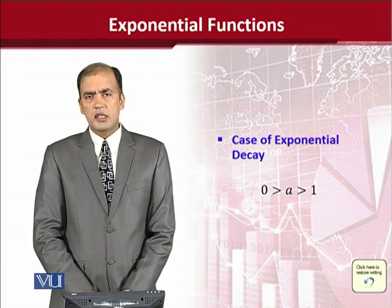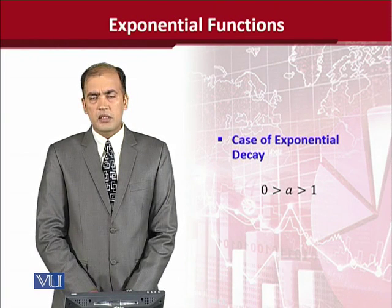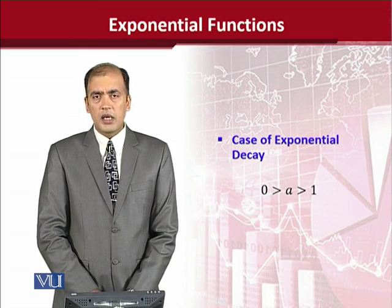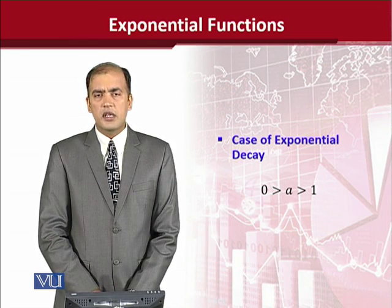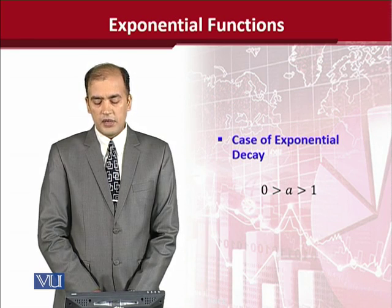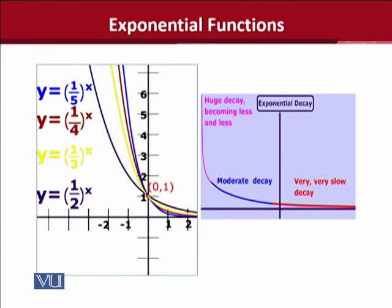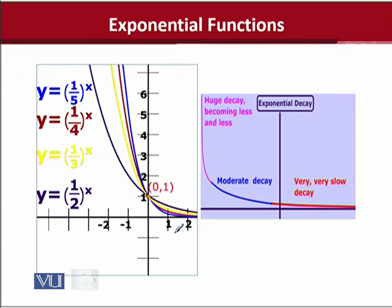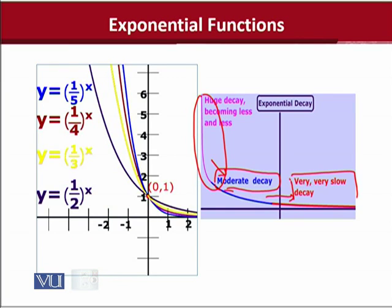Now we come to the case of exponential decay. We can anticipate that the value of 'a' shall be less than 1 — more specifically, a fraction between 0 and 1. This diagram will guide us: initially the decay is very pronounced and declining. When it declines to a certain point it becomes a moderate sort of decay, and afterwards it becomes a very slow decay.